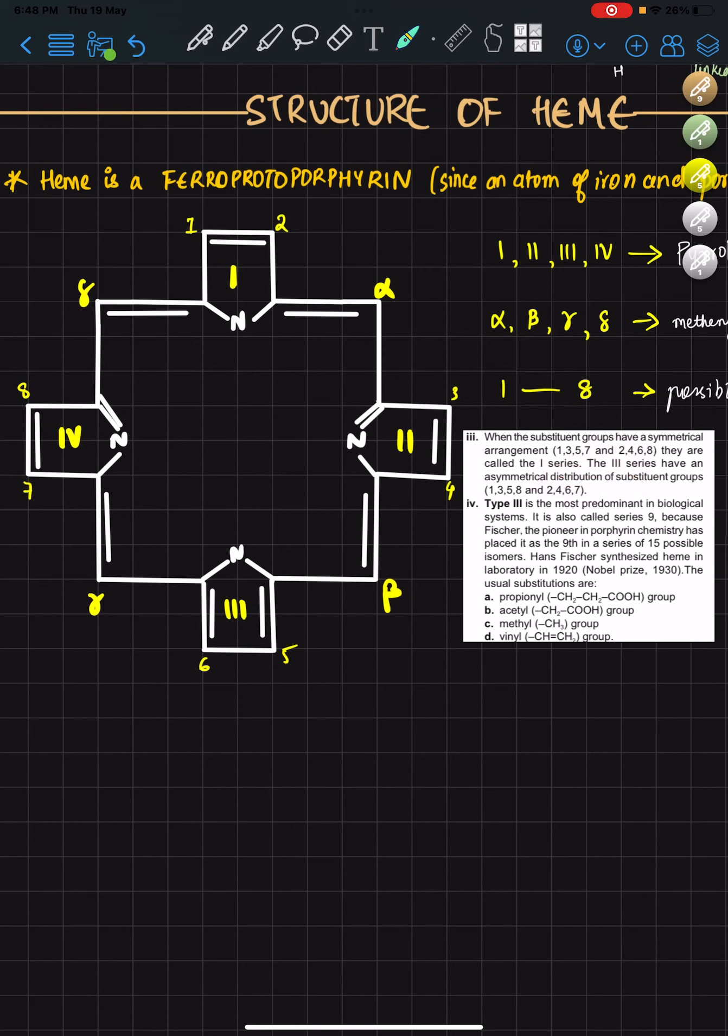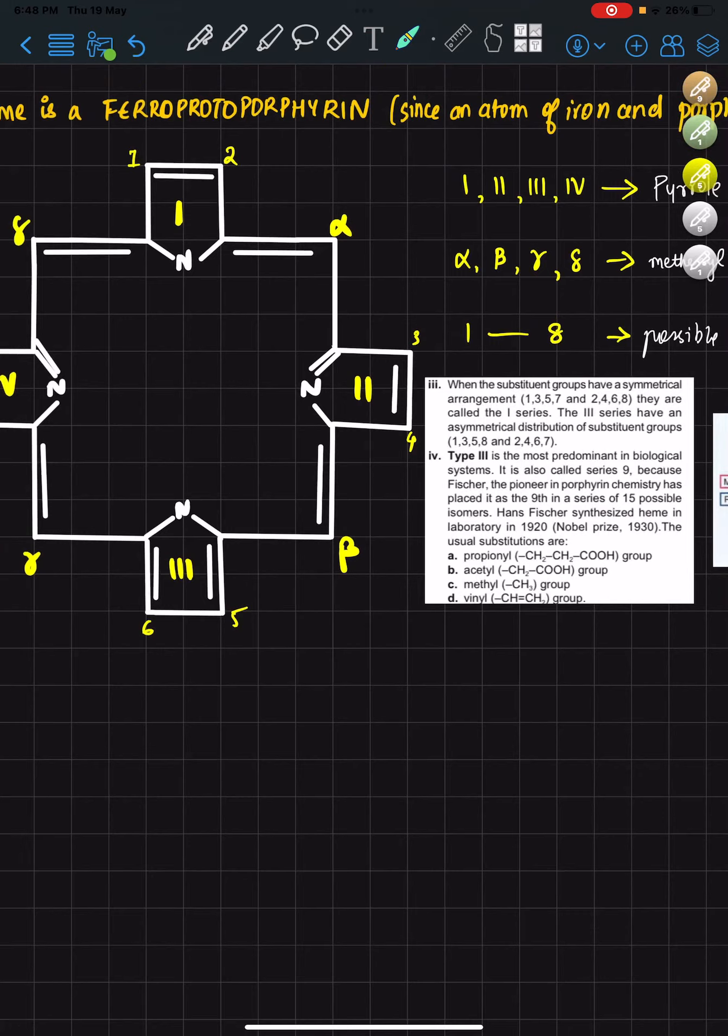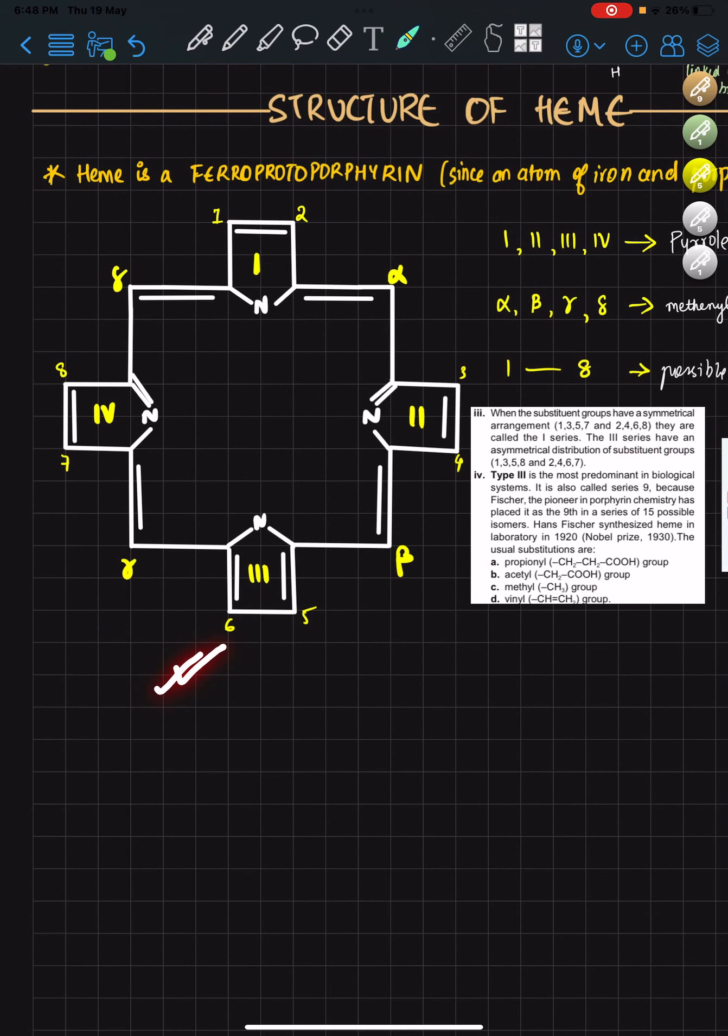Now, another thing is what kind of substitutions can take place. There are four: propionyl, acetyl, methyl, and vinyl. You see acetyl in uroporphyrinogen III, but in the final heme structure, all the acetyl groups are replaced by methyl groups. In uroporphyrinogen, all four are propionyl groups, but eventually two of the propionyl groups are changed into vinyl groups.